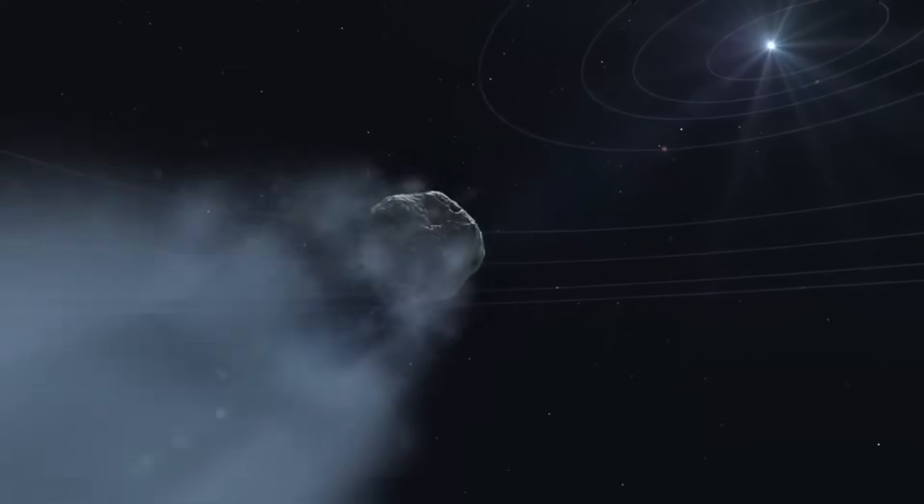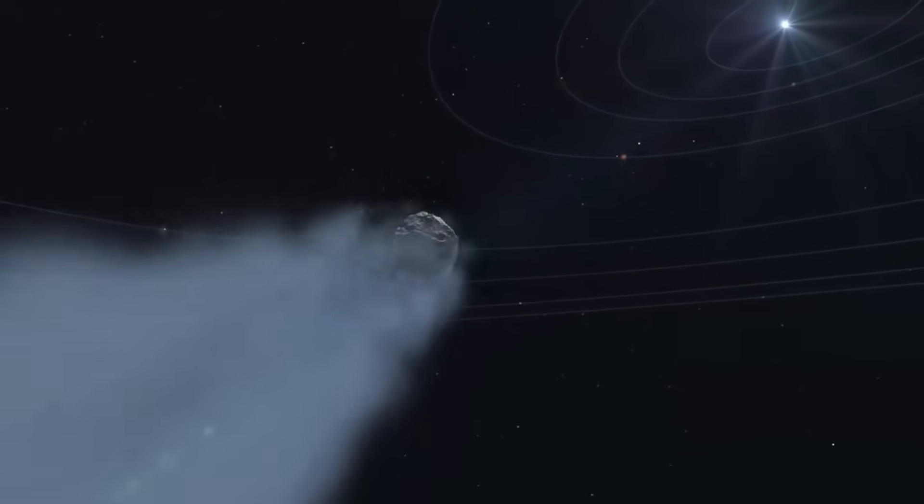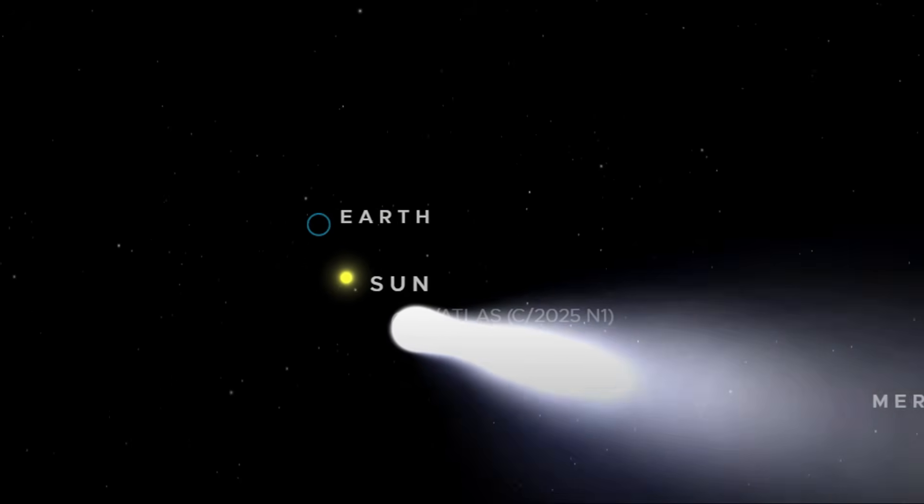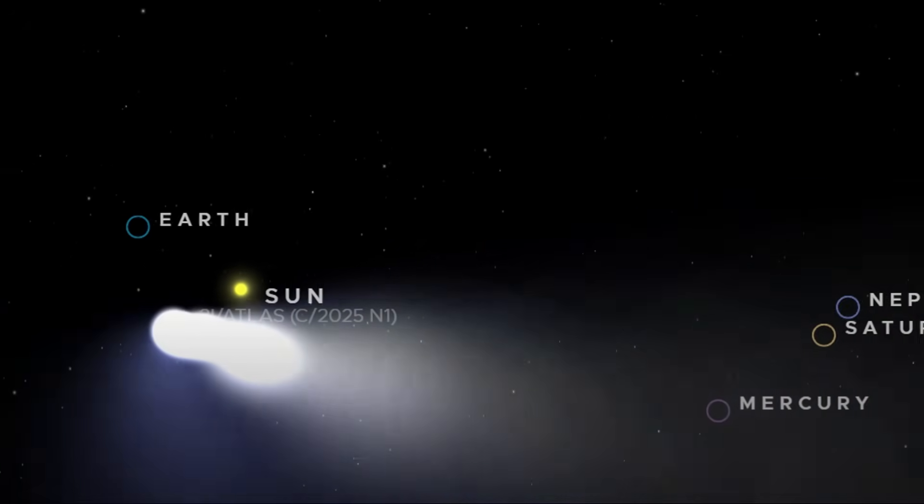Finally, the signature of a comet, its coma and tail. As a comet approaches the sun, its ices sublimate, ejecting gas and dust. This material is pushed by the solar wind, forming its characteristic tail. The motion in the video did not align with these dynamics.